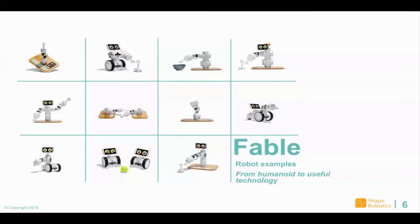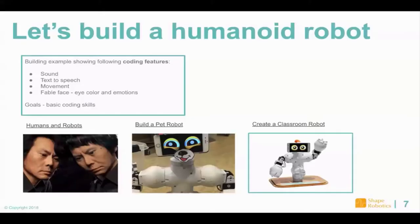The first thing I'd like to show you is how to build a humanoid robot. This is a task I would give students: create a humanoid robot with these four necessary features to reach the goal — some sound, some text-to-speech, some movement, and some emotion using the app and the Fable Face.